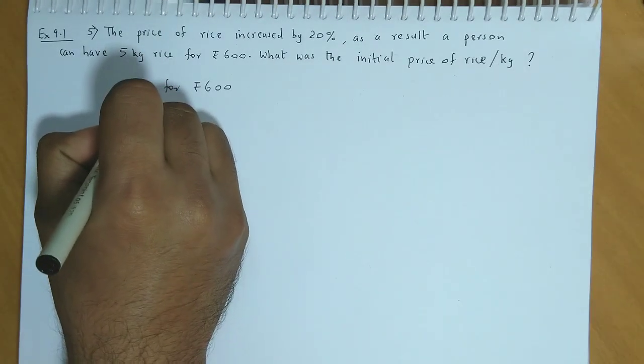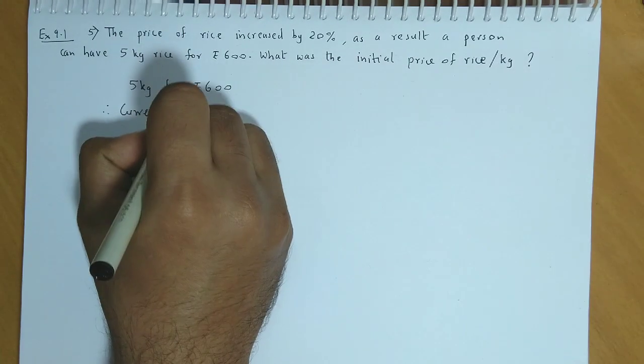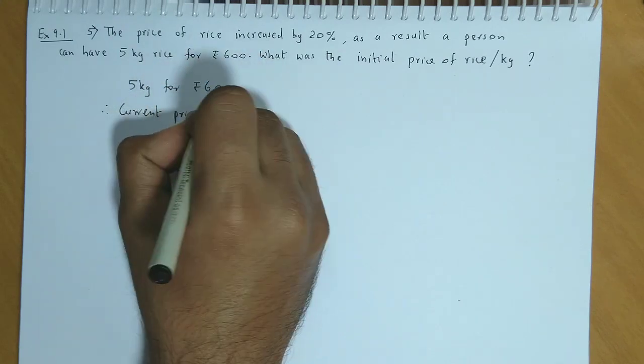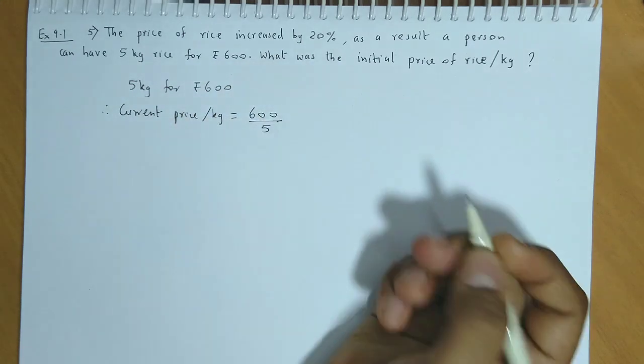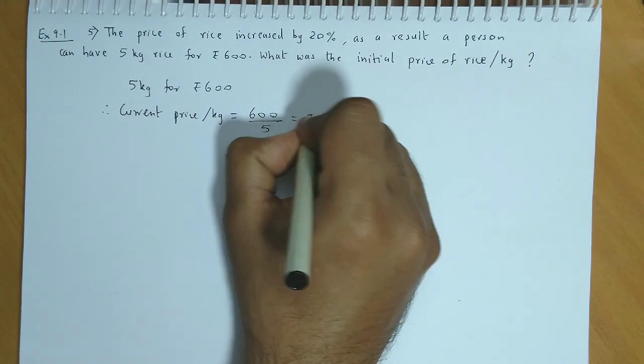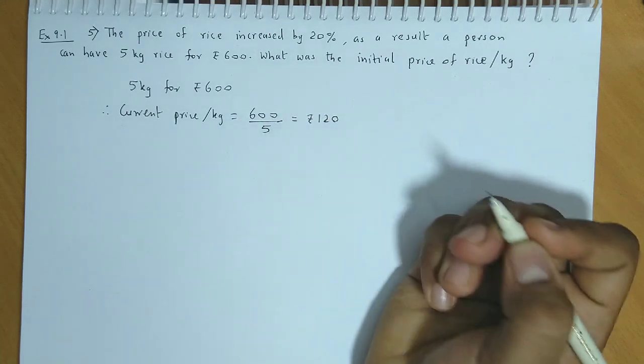Therefore, the current price per kg will be Rs. 600 divided by 5. The current price is Rs. 120 per kg.